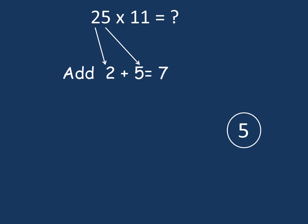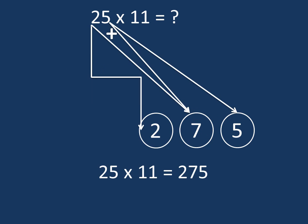Add two digits of the number: 2 plus 5 is equal to 7. Place 7 to the left of 5. Next, bring the last digit to extreme left, that is 2. The result is 275.